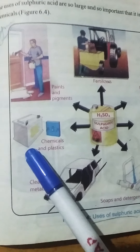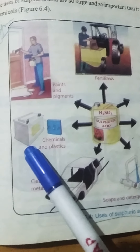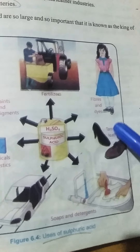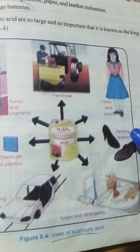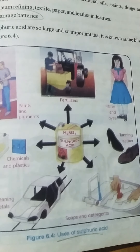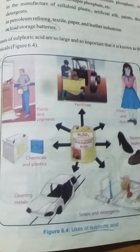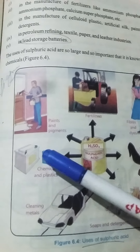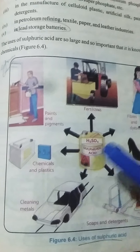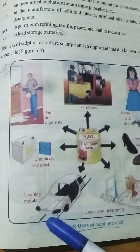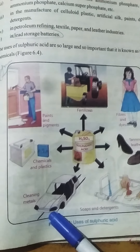Sulfuric acid is used in lead storage batteries and in the tanning of leather. In the leather industry, tanning is used to make different types of things such as shoes, bags, or other items. It is also used in plastics and to clean metals — as shown, sulfuric acid is used to clean metal surfaces such as car parts.